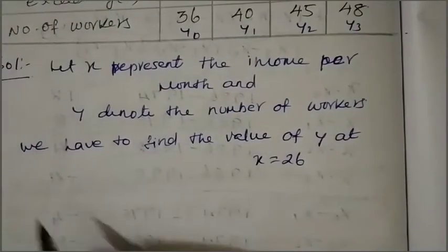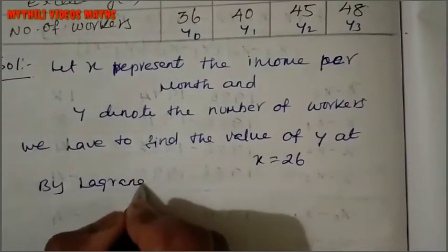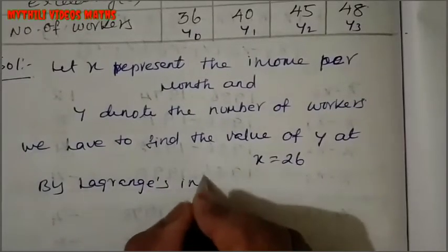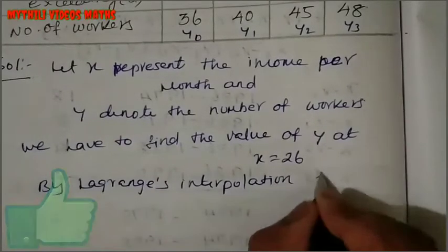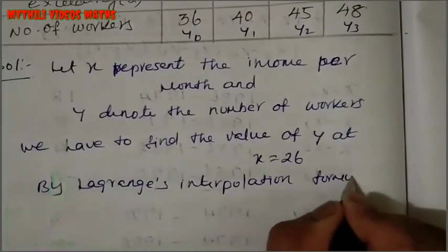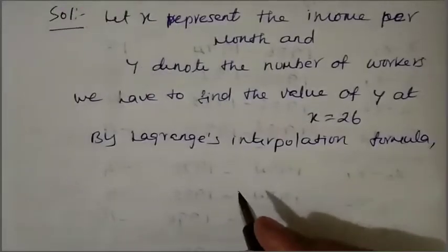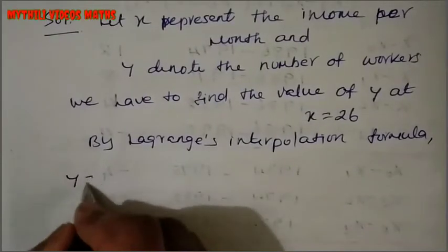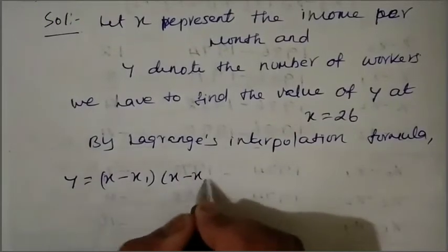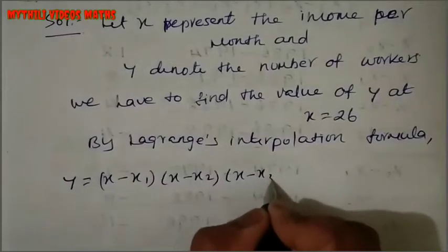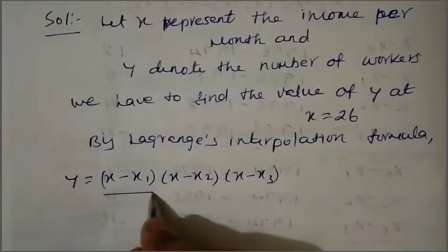So Y is found using Lagrange's formula. The first term is Y0 multiplied by (X − X1)(X − X2)(X − X3), divided by the denominator.